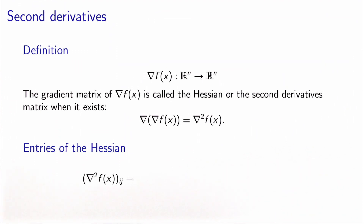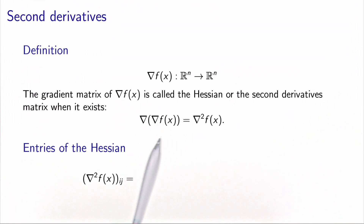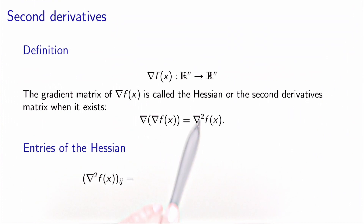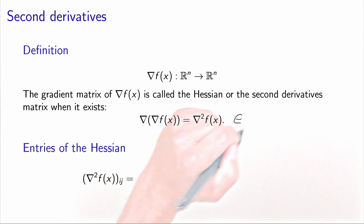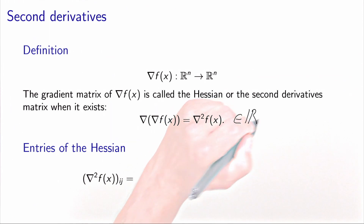So we can actually calculate the gradient matrix of this function. This happens to be called the Hessian, or the second derivatives matrix, when it exists. It is denoted by the gradient matrix of the gradient, and the notation that we use is nabla squared of f. This is a matrix of size n times n.